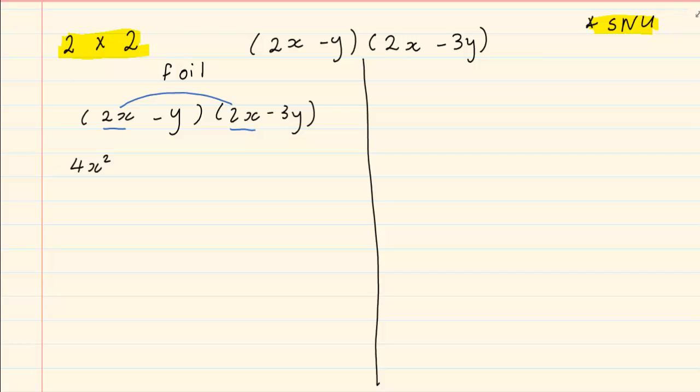Then we are going to do O which is the outer. The outer means the two outside ones. So 2x is the outside one on the first bracket and minus 3y is the outside one on the second bracket, giving us minus 6xy.